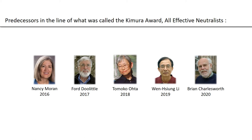taught us about junk DNA and the idea that intronic and mobile element associated DNA may accumulate in an effectively neutral fashion in different phylogenetic lineages. Nancy Moran did foundational work on the accumulation of deleterious mutations in serial bottleneck endosymbionts. Sung Lee and Brian Charlesworth have made numerous contributions to theoretical population genetics, much of what is associated with the concept of effective neutrality.